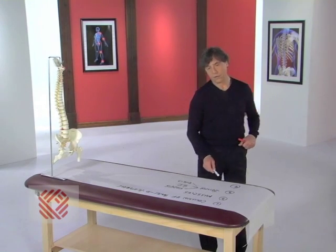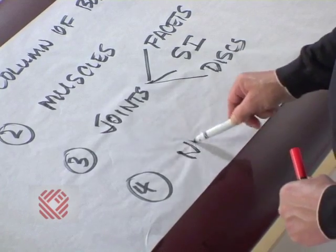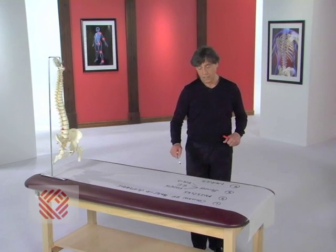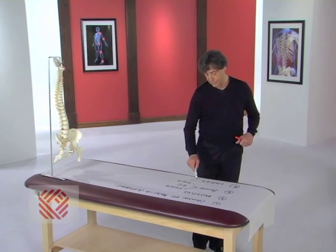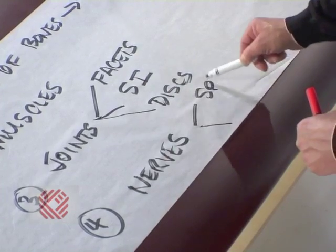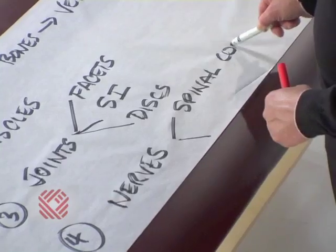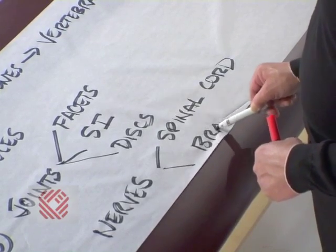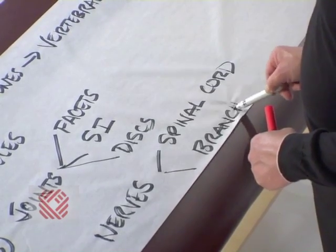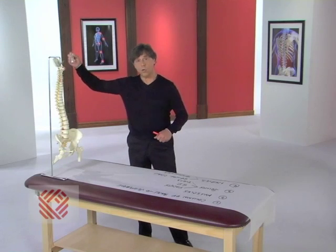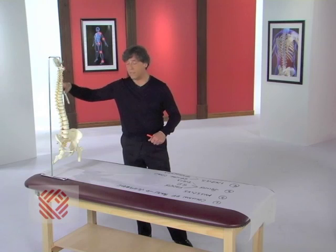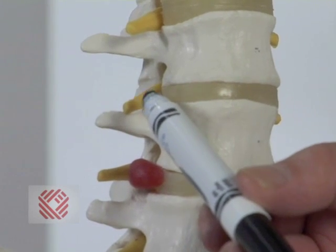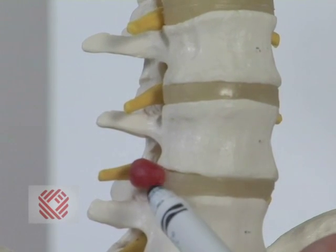The fourth category is that of the nerves. The nerves comprise the electrical system of the spine, and there are two basic types: the spinal cord, and then branches of the spinal cord that are called the peripheral nerves.